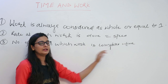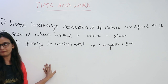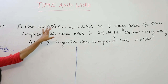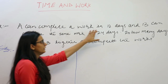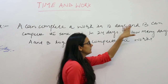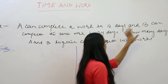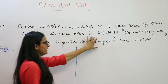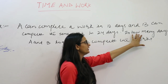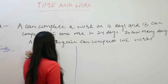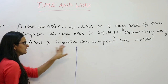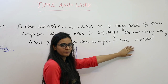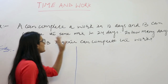Let us take an example. A can complete a work in 12 days. B can complete the same work in 24 days. In how many days can A and B together complete the work?